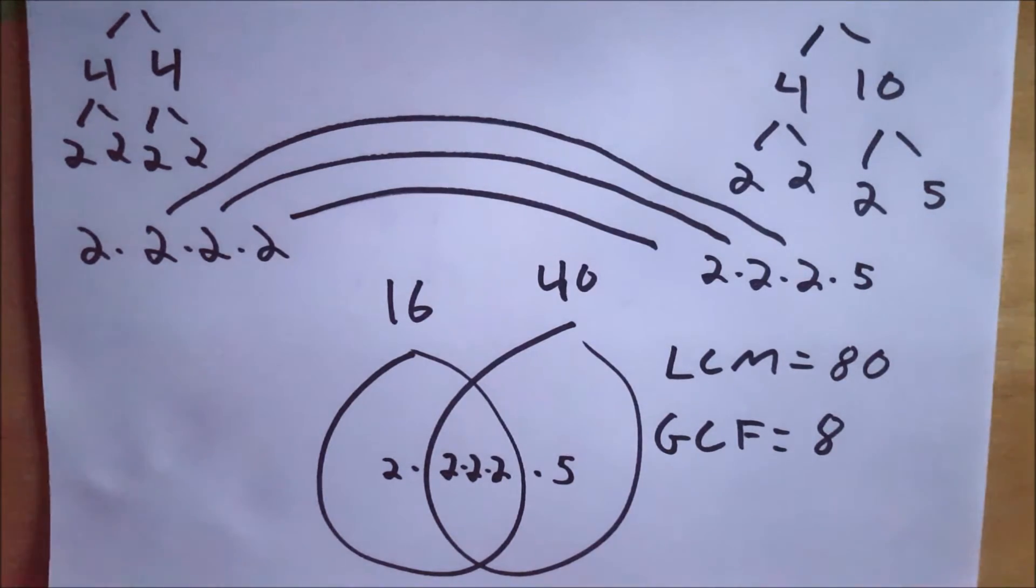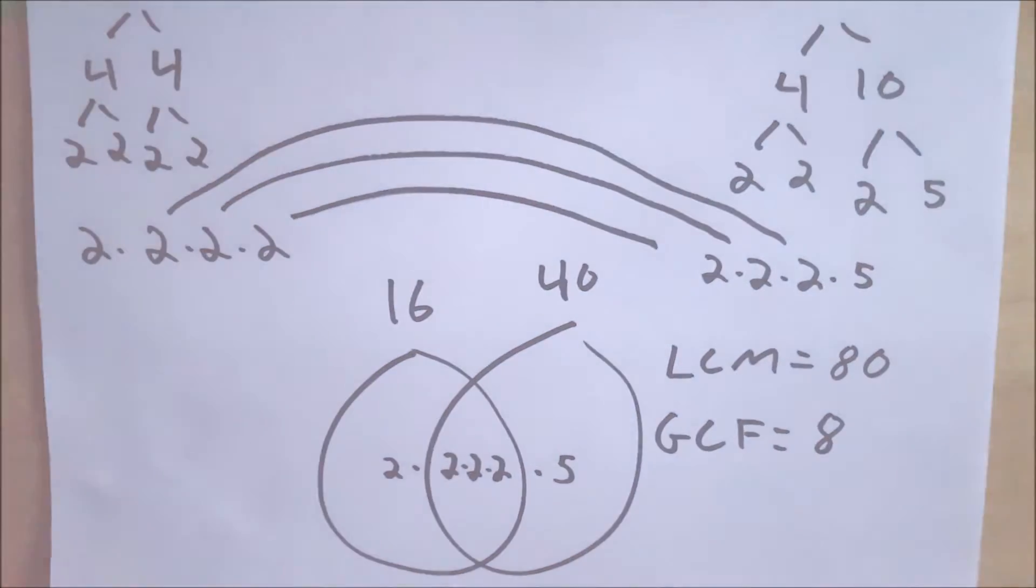So I hope this video has helped you figure out what I think is a really good way, real convenient, easy to follow way of finding the least common multiple and the greatest common factor of any two numbers. Let me know if you need any more clarification in the comments or if there's any other videos you'd like to see. I'll see you next time. Be sure to subscribe for the swankiest math videos on the internet.